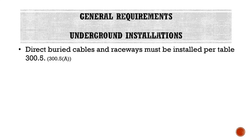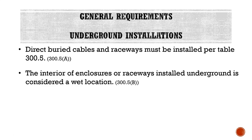Now we're switching to underground installations, which applies to both conduit and cables. Direct buried cables and raceways must be installed per Table 300.5. The interior of enclosures or raceways installed underground is considered a wet location — this is important. People sometimes pull NM cable or conductors only rated for dry locations in an underground raceway, which is not permitted. Since a PVC conduit installed underground has an interior considered a wet location, we are required to use conductors rated for wet locations, such as THWN.